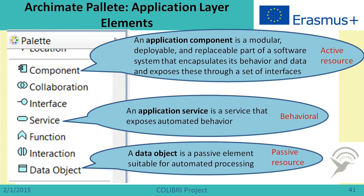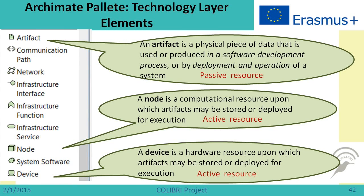Now let us consider technology layer elements. The central element is the node, which is a computational resource upon which artifacts may be stored or deployed for execution — it is an active resource. Artifacts are physical pieces of data used or produced in a software development process or by deployment and operation of a system — they are considered passive resources. We also have the device, which is a hardware resource upon which artifacts may be stored or deployed for execution, and sometimes includes a representation of the operating system.